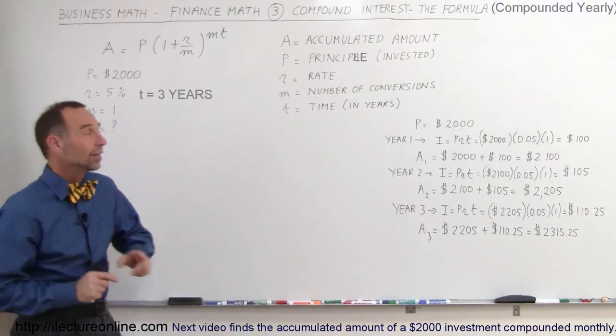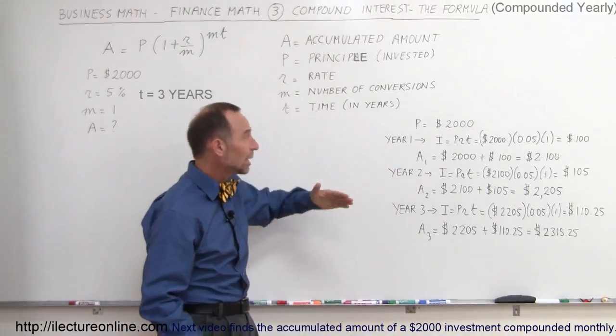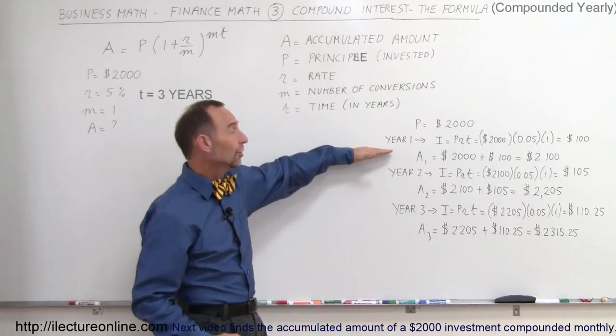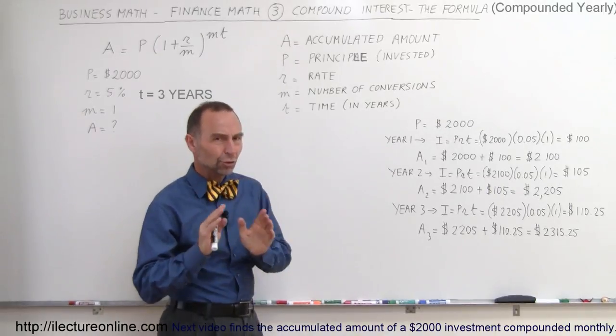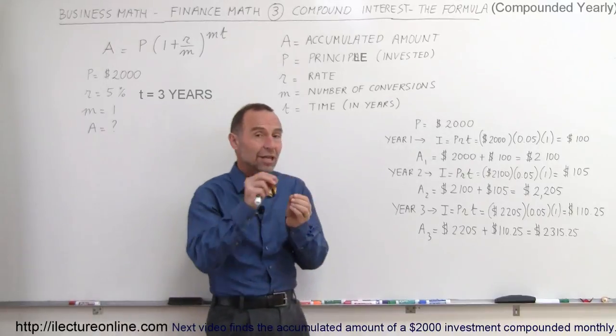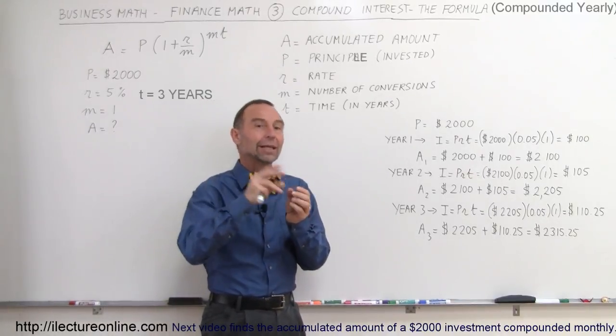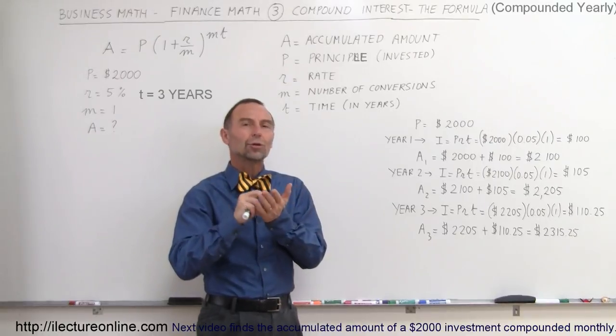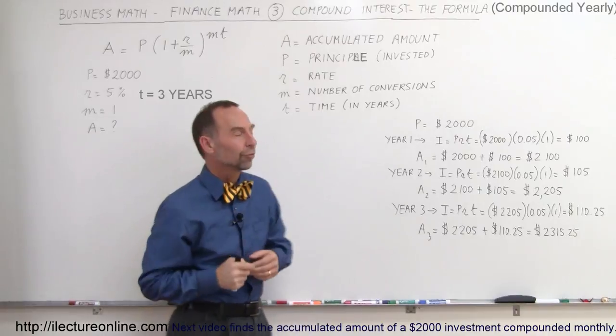What does compounded mean? Well, if we put in a $2,000 investment for three years and it's compounded yearly, every year you figure out how much interest you've earned and add it to the principal. Then the next year, you'll be earning money not only on the principal but also on the interest you collected in the first year.